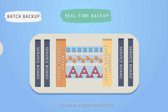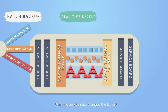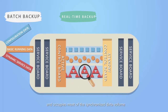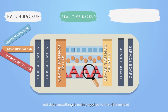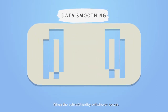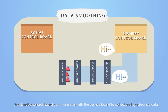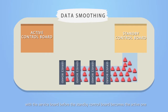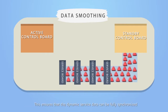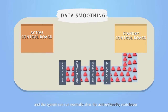This process is called active standby data synchronization. The data to be synchronized includes configuration data, basic running data, and dynamic service data. Dynamic service data changes the fastest and occupies most of the synchronized data volume. Therefore, it is difficult to synchronize dynamic service data, and data smoothing is mainly applied to this data instead. When the active standby switchover occurs, the standby control board communicates with the service board to collect and synchronize data with the service board before the standby control board becomes the active one.